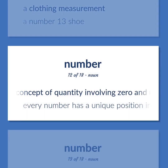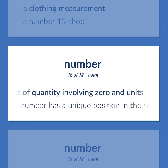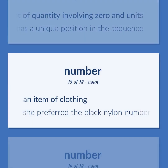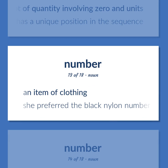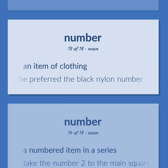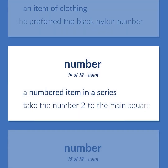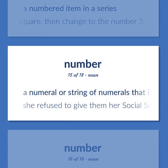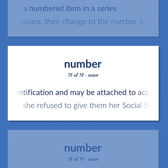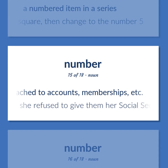A concept of quantity involving zero and units. Example: Every number has a unique position in the sequence. An item of clothing. Example: She preferred the black nylon number. A numbered item in a series. Example: Take the number 2 to the main square, then change to the number 5. A numeral or string of numerals used for identification, and may be attached to accounts, memberships, etc. Example: She refused to give them her social security number.